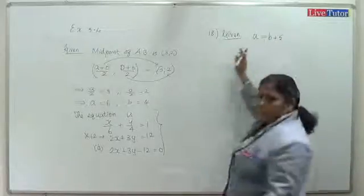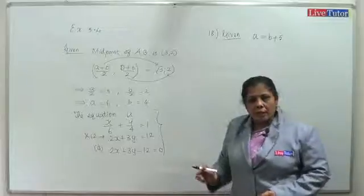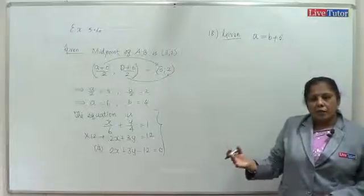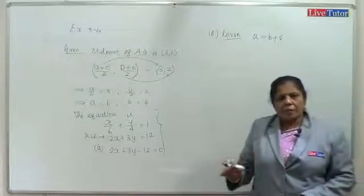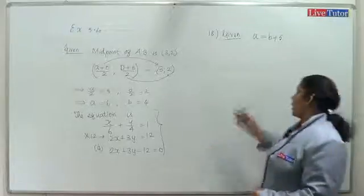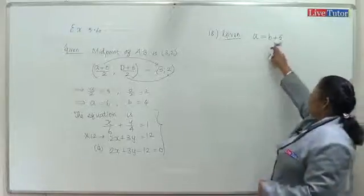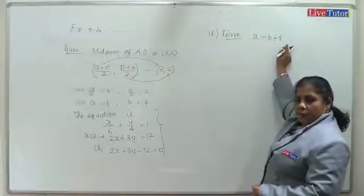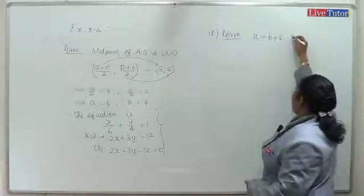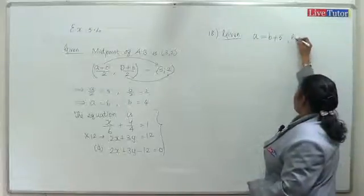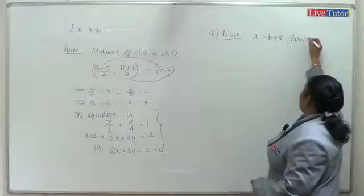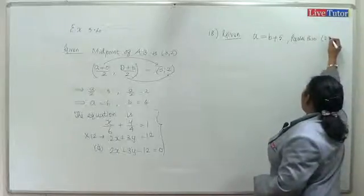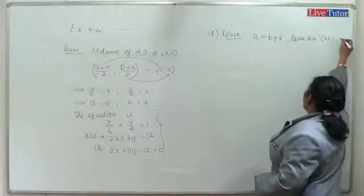Given: x-intercept exceeds y-intercept by 5, so x-intercept a is 5 more than y-intercept b. Therefore a equals b plus 5. The line passes through (22, -6).